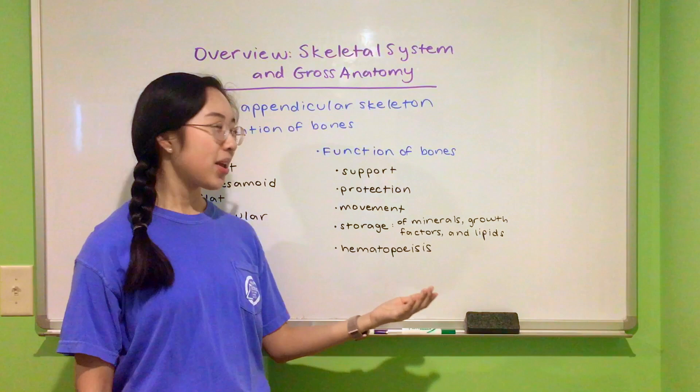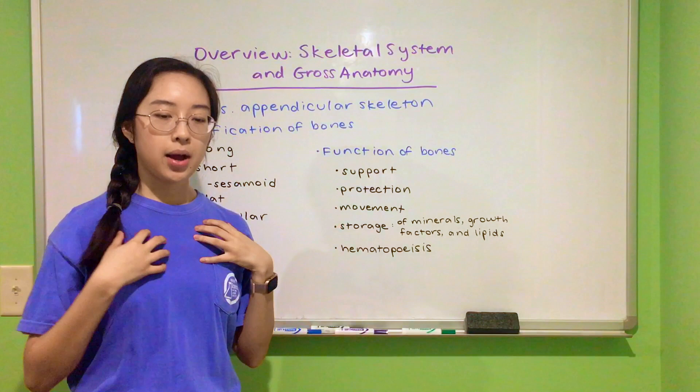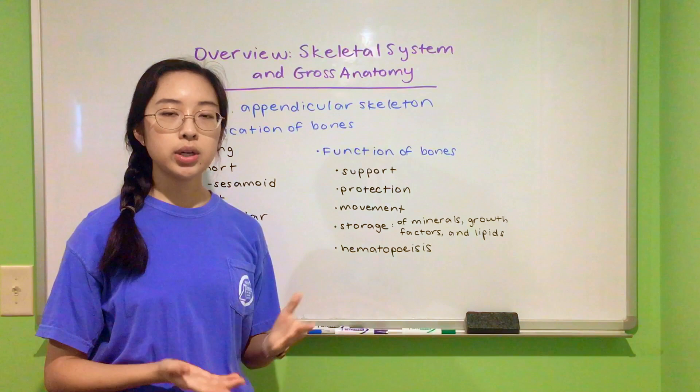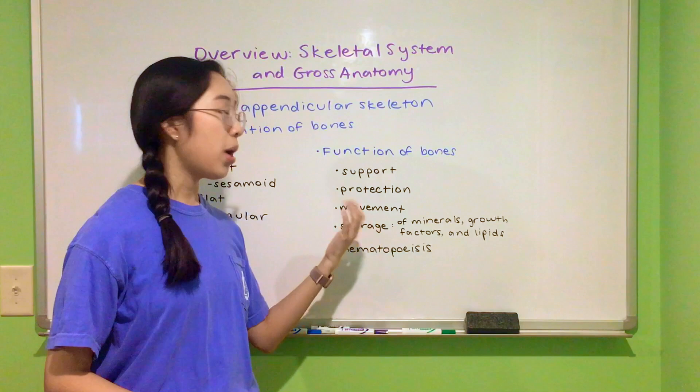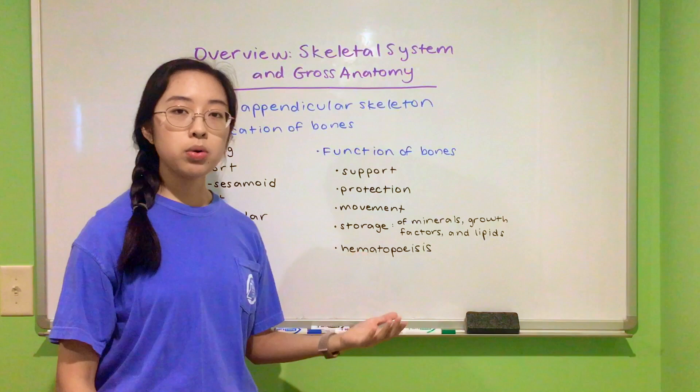Here are five major functions of the skeletal system. Support and protection are pretty self-explanatory — bones support your body and hold you up. Your cranium protects your brain, and your rib cage protects your heart, lungs, and other vital organs. Movement is also important because your bones serve as levers for your muscles to pull on. Without bones, your muscles would have nothing to pull on. Your joints are sites of movement at which you can bend and move in lots of different ways.